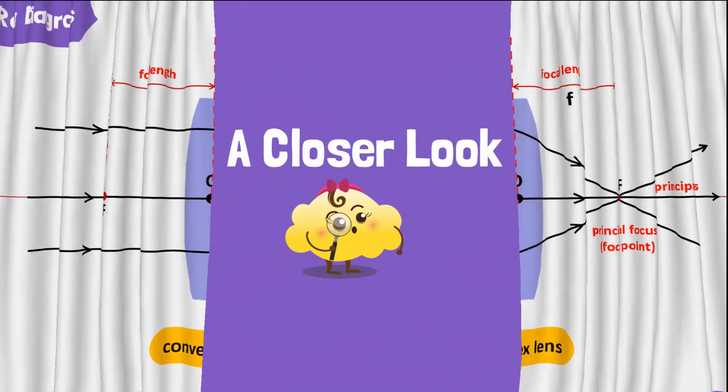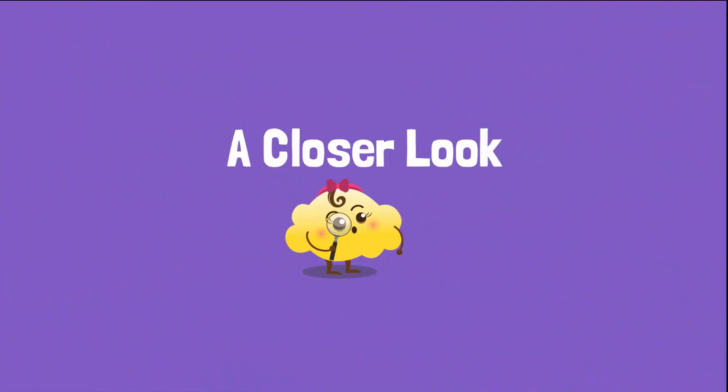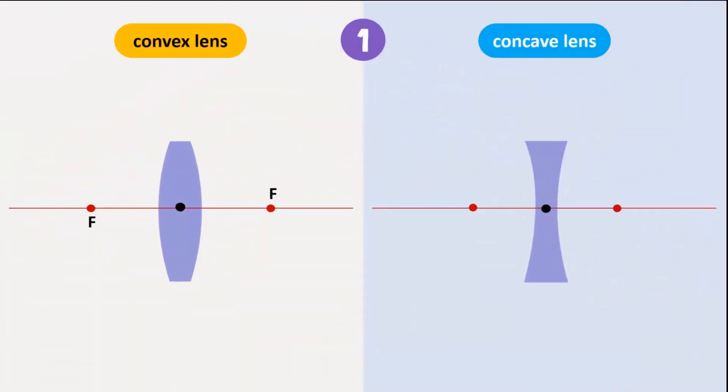Let's take a closer look now at the ray diagrams for both lenses. When a ray of light travels parallel to the principal axis, it refracts and passes through the focal point on the other side of the convex lens.